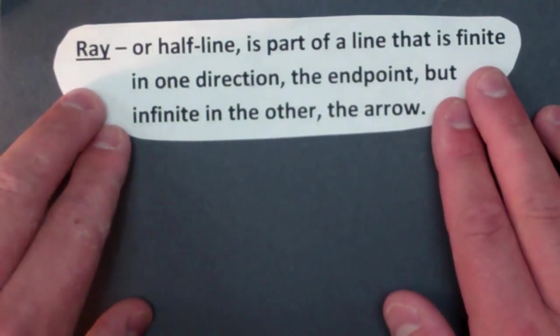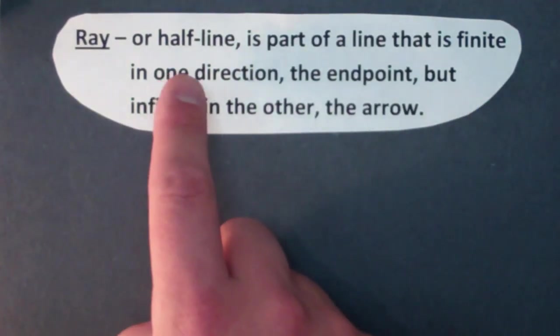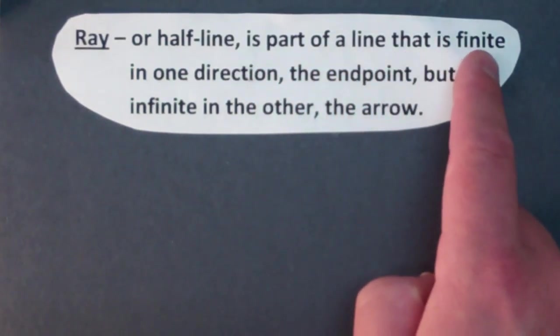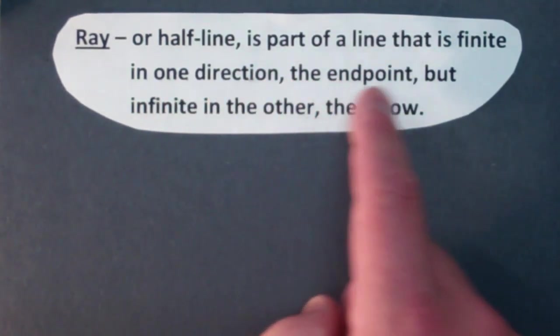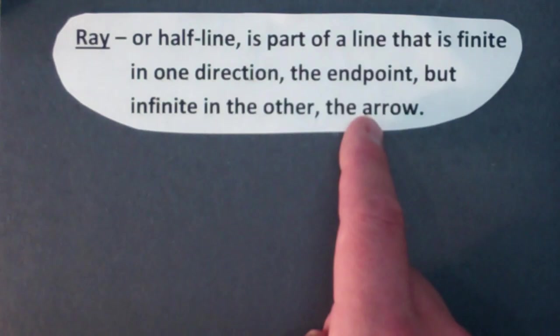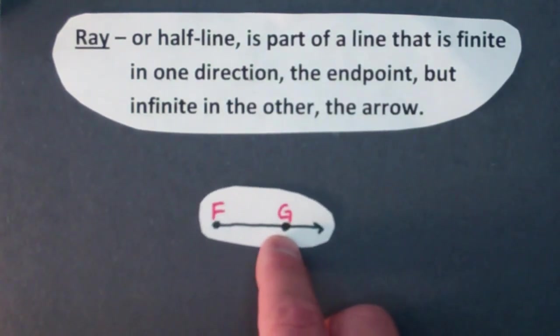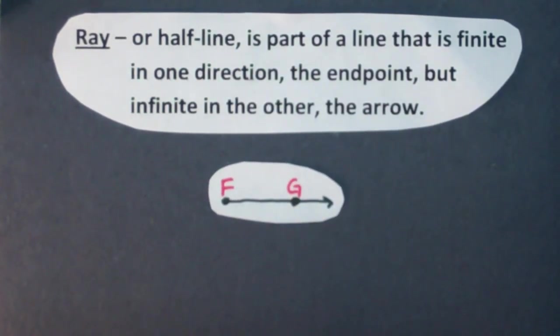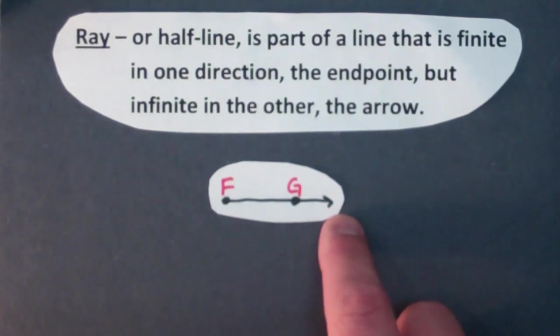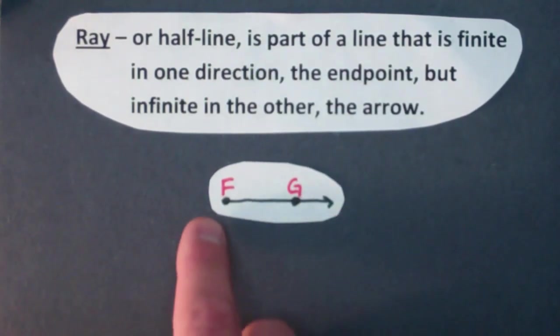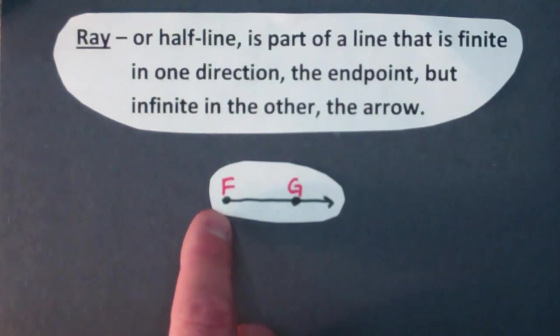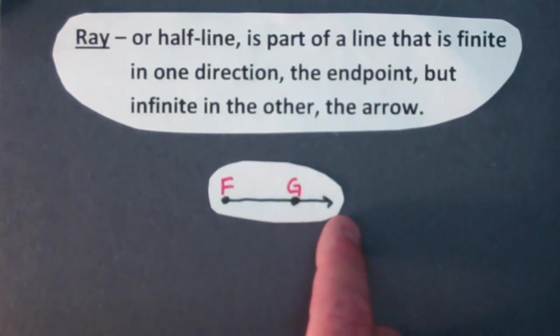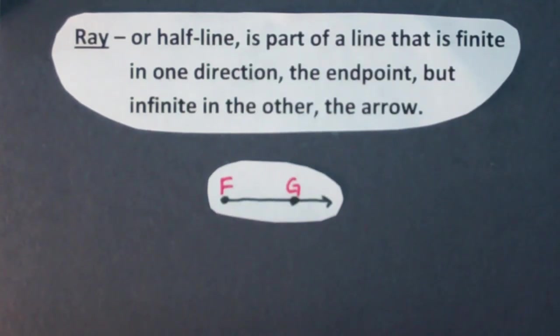So the last vocabulary word we have is ray. Another word for a ray is a half line. It's part of a line that is finite in one direction where the end point is but infinite in the other direction where the arrow is. And I've got an example of a ray right here. Notice there's only one arrow on the ray. That's important to understand. And the end point is F and the ray travels from the end point through point G and keeps traveling forever in only one direction.